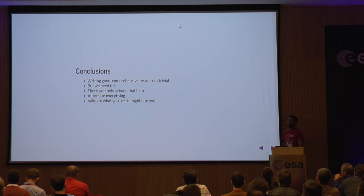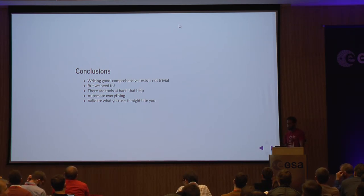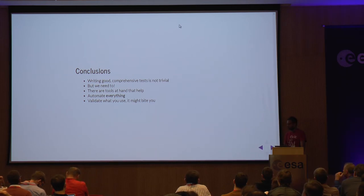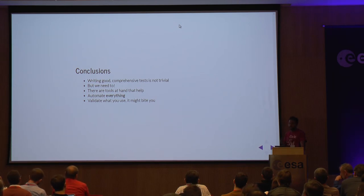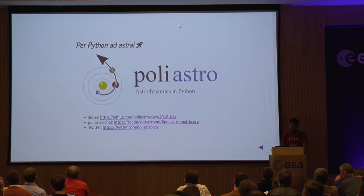Conclusions: writing good and comprehensive tests is not trivial, but we need to, because we want to avoid stupid errors. There are tools at hand that help. Automate everything — this is a good way to reduce human factors. Validate what you use, because it might bite you. And remember: the only bug-free code is the code you don't write. Thank you very much.